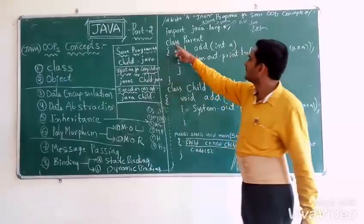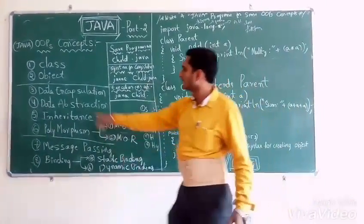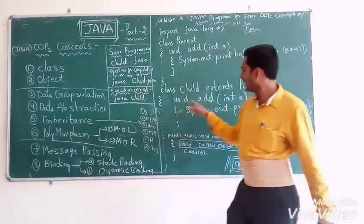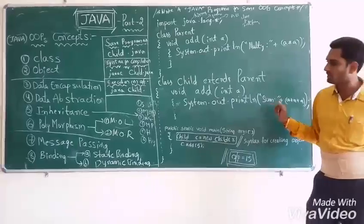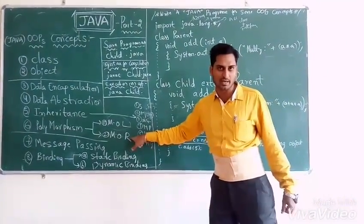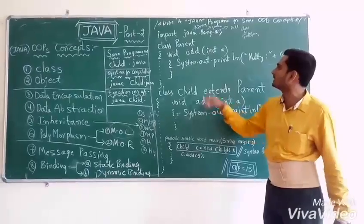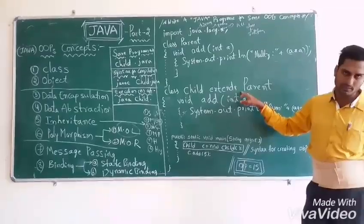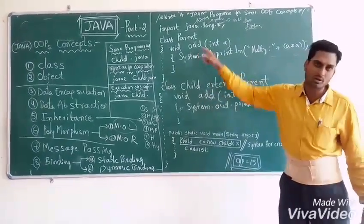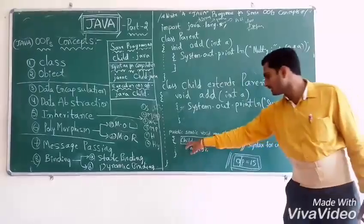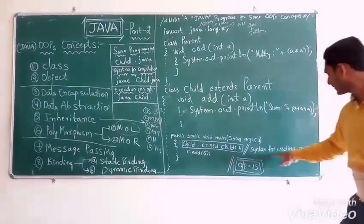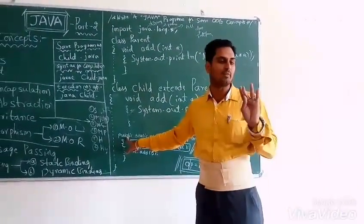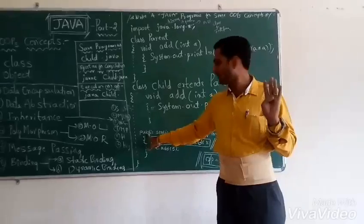The program starts with class. Data encapsulation, data abstraction, and method overriding are also covered here. Method overriding is done in different classes — class Parent extends class Child; the add method is overridden. The object creation syntax box is here. Access specifiers are public, private, protected, and default — these were covered in the Part 1 video.